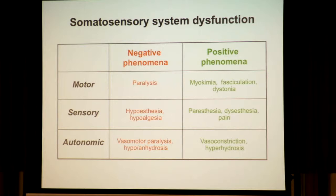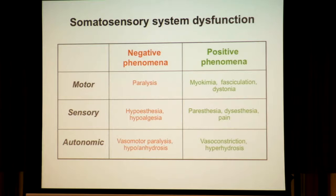Whenever there is a disease of the nervous system, there may be two types of phenomena: negative phenomena and positive phenomena — this is very Jacksonian, from many years ago. If you divide things between motor, sensory, and autonomic systems, and between negative and positive, you can fill the boxes with different symptoms and signs that appear in these patients. Pain is a positive sensory phenomenon that appears in cases of peripheral neuropathic pain.